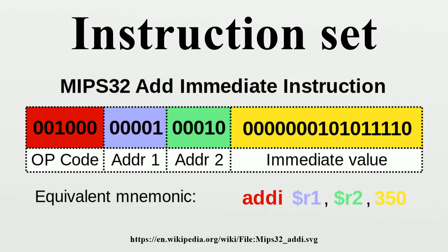The instructions constituting a program are rarely specified using their internal numeric form. They may be specified by programmers using an assembly language, or more commonly, may be generated from programming languages by compilers.